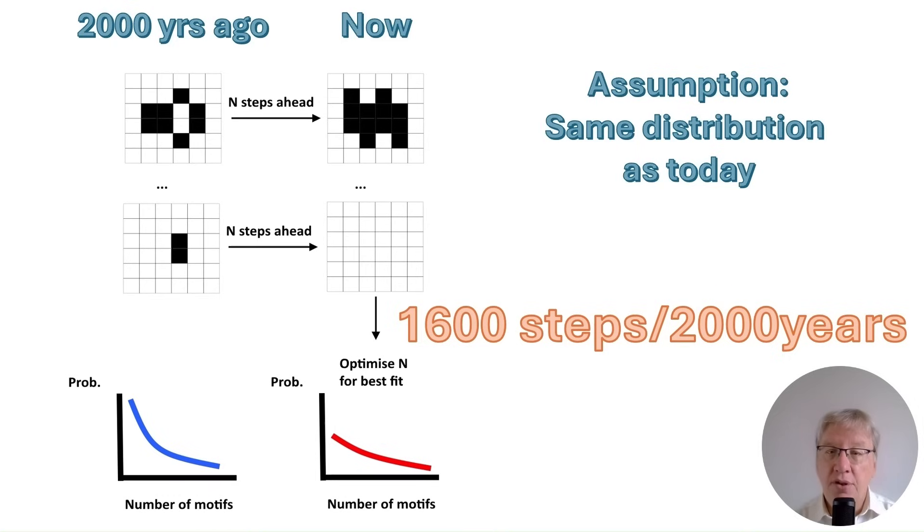The optimization proceeds in two steps. First, we start from the distribution in blue. We let the simulation age the data set incrementally. For each step, we compare the shape of the aged data to the shape of the ancient data and record the resulting error value. Second, we analyze all the recorded error values to determine the single simulation step where the error was at its absolute minimum. This point is our best fit.